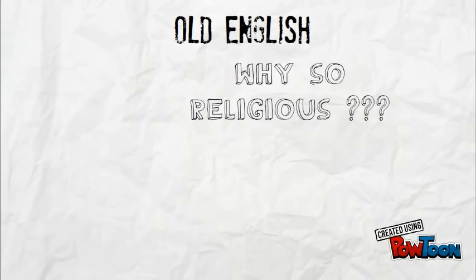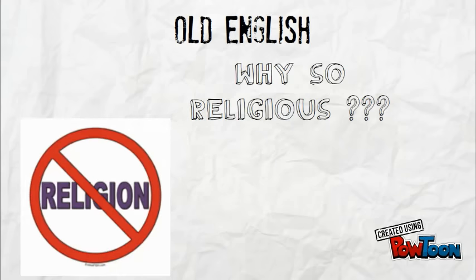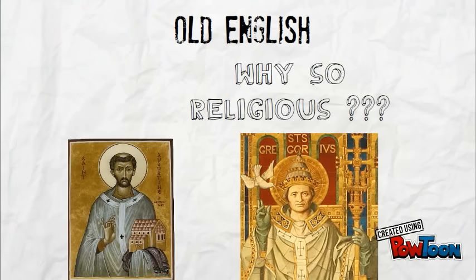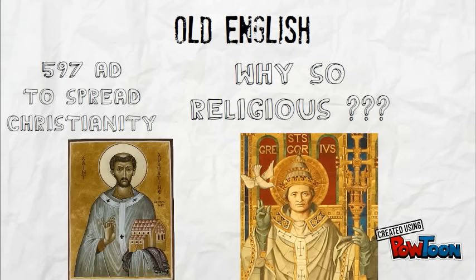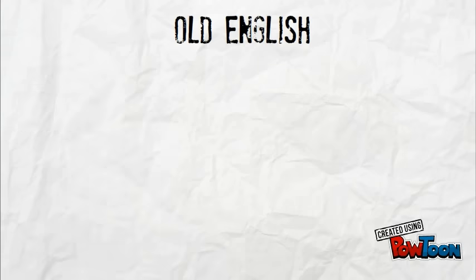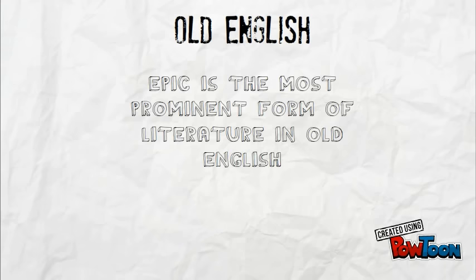You may be asking: why so many religious works? Well, Pope Gregory sent St. Augustine to Britain in 597 AD to spread Christianity, and the Romans were also introducing the religion to the Celtics during their time there. But the primary literature during the Old English period is still poetry, especially epics, with Beowulf being the most renowned example.